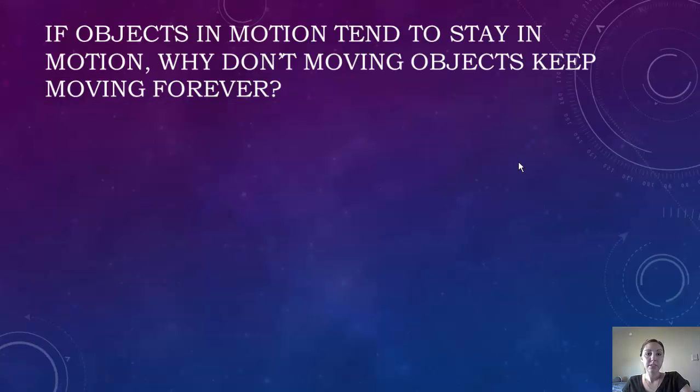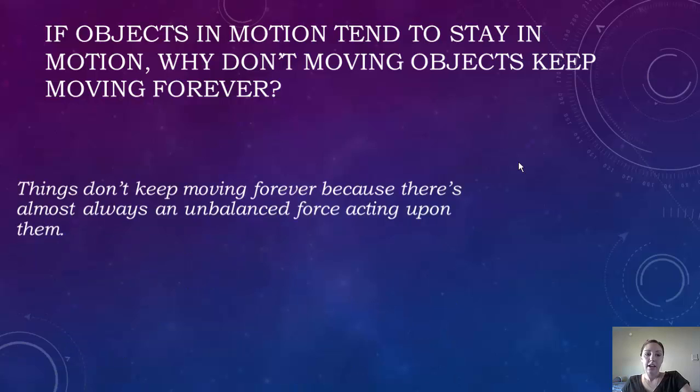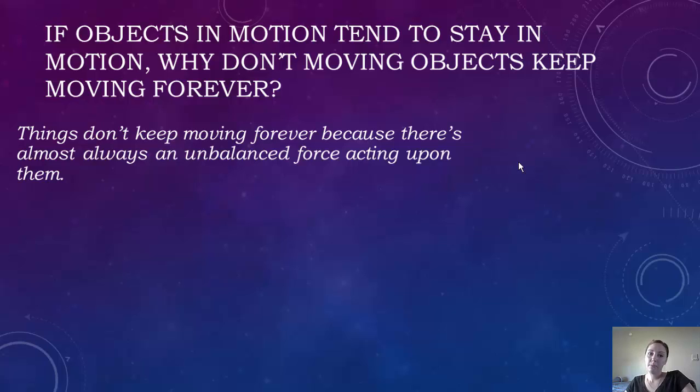So if objects in motion tend to stay in motion, why don't moving objects keep moving forever? Things don't keep moving forever because there's almost always an unbalanced force acting upon them. Whether it's friction or gravity, there's always something there to make that force unbalanced.